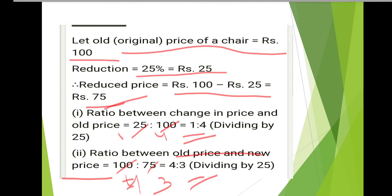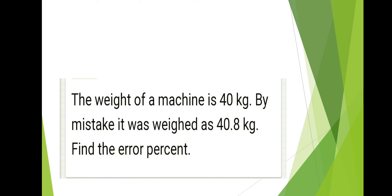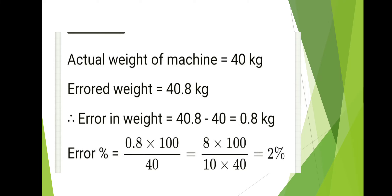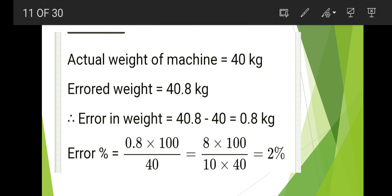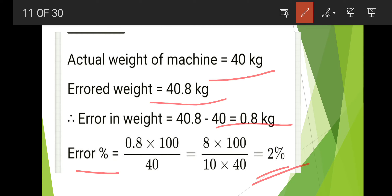Next: the weight of a machine is 40 kg, but by mistake it was weighed as 40.8 kg. Find the error percent. The actual weight is 40, the measured weight is 40.8, so the error in weight is 0.8 kg. Error percent will be 0.8 into 100 by 40, and when you solve you get 2 percent.